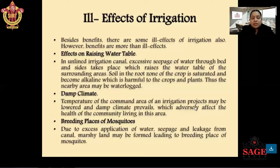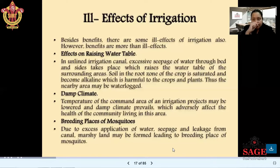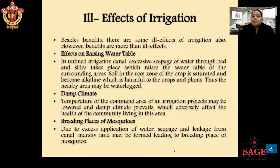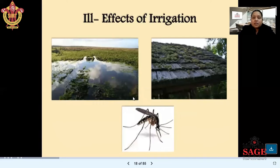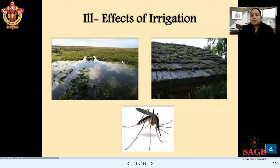Next is the breeding of mosquitoes. When water is stored in open areas, breeding of mosquitoes increases. Due to excess application of water and seepage and leakage from canals, marshland may be formed, creating breeding places for mosquitoes. Examples of ill effects include waterlogging, dampness, and mosquito problems in affected areas.